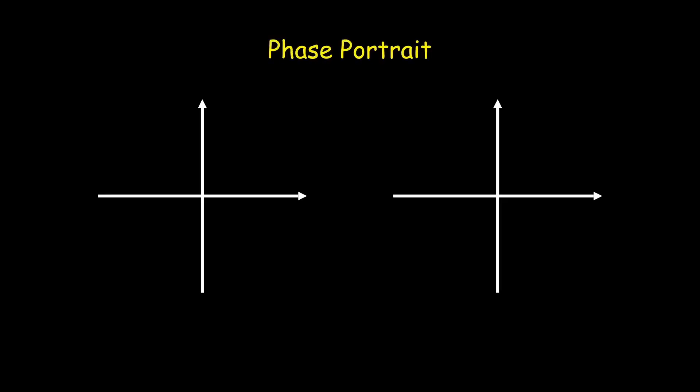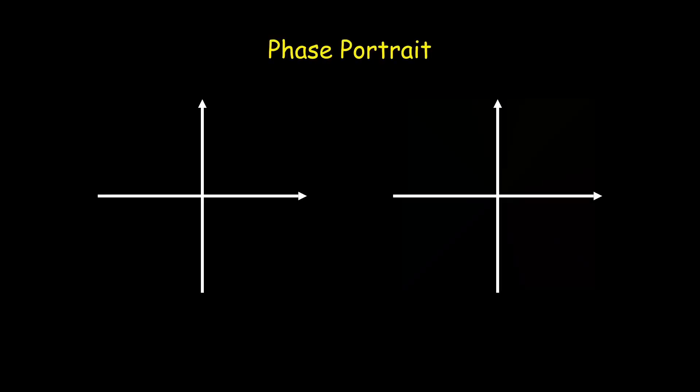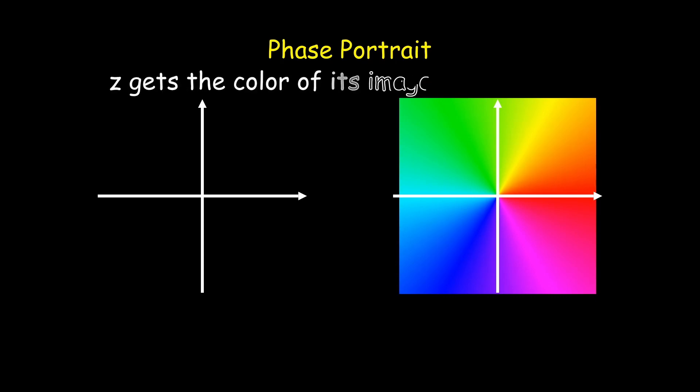We can use a phase portrait to describe the w plane using radial coloring, discussed previously. Each point z will then be assigned a color, corresponding to the phase of its image point w. If we do this for all points of the z plane, we get the phase portrait of the function f.